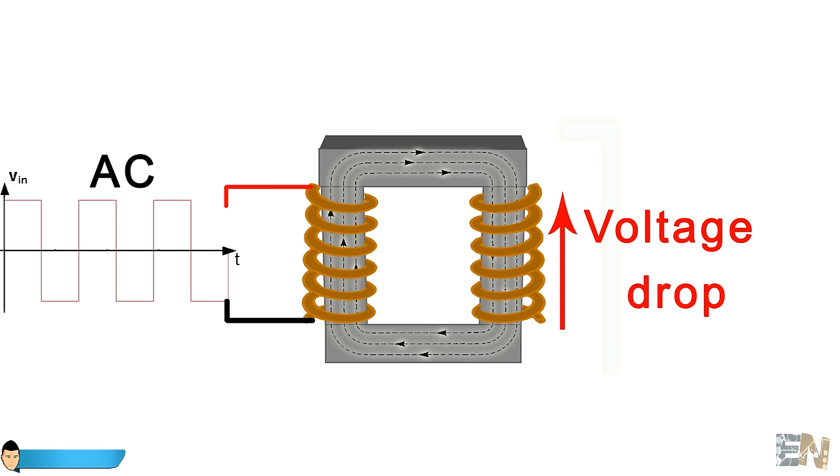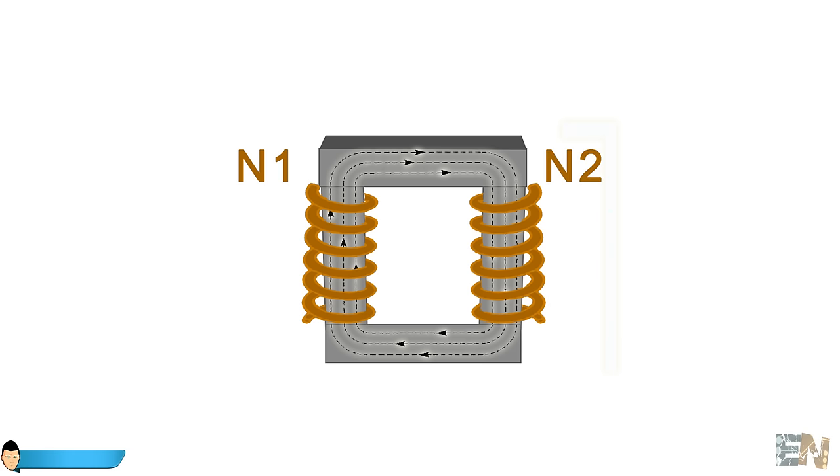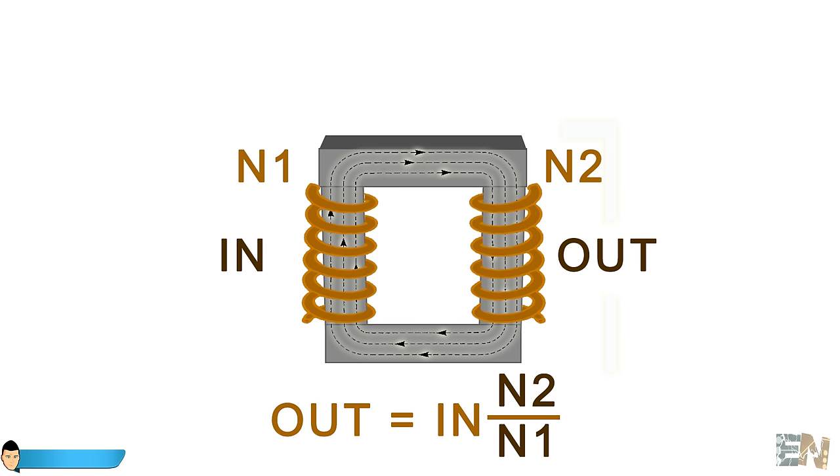In a normal transformer, the voltage ratio is related with the number of windings of the first and second coil. In an ideal transformer, the output to the input voltage ratio is equal to the secondary coil number of windings divided by the primary coil number of windings, like shown here.